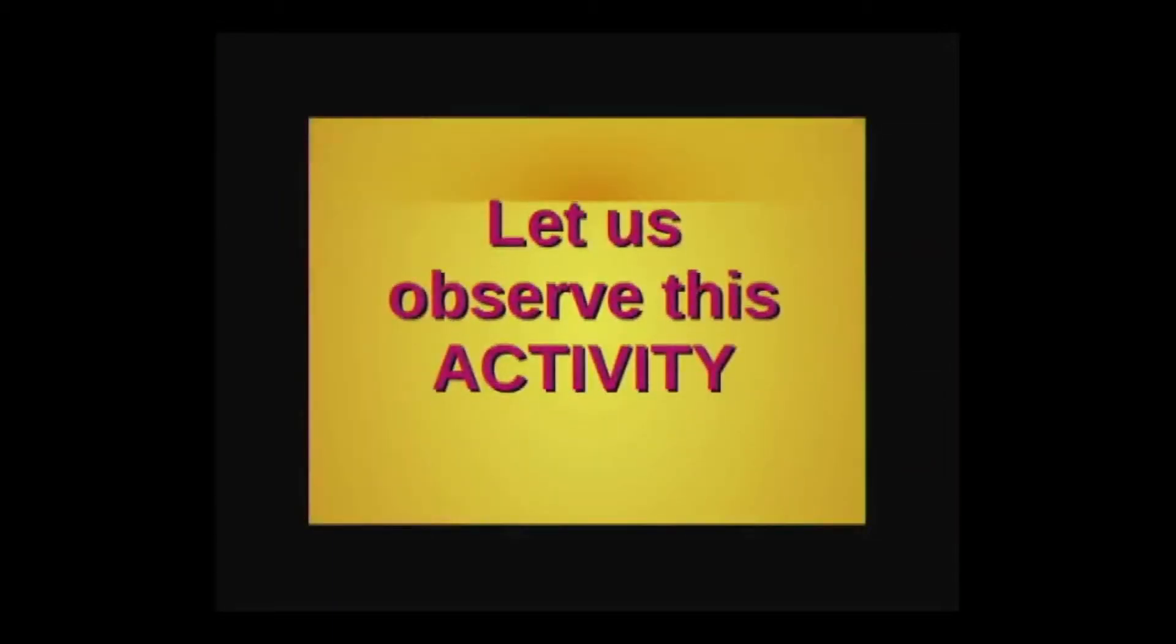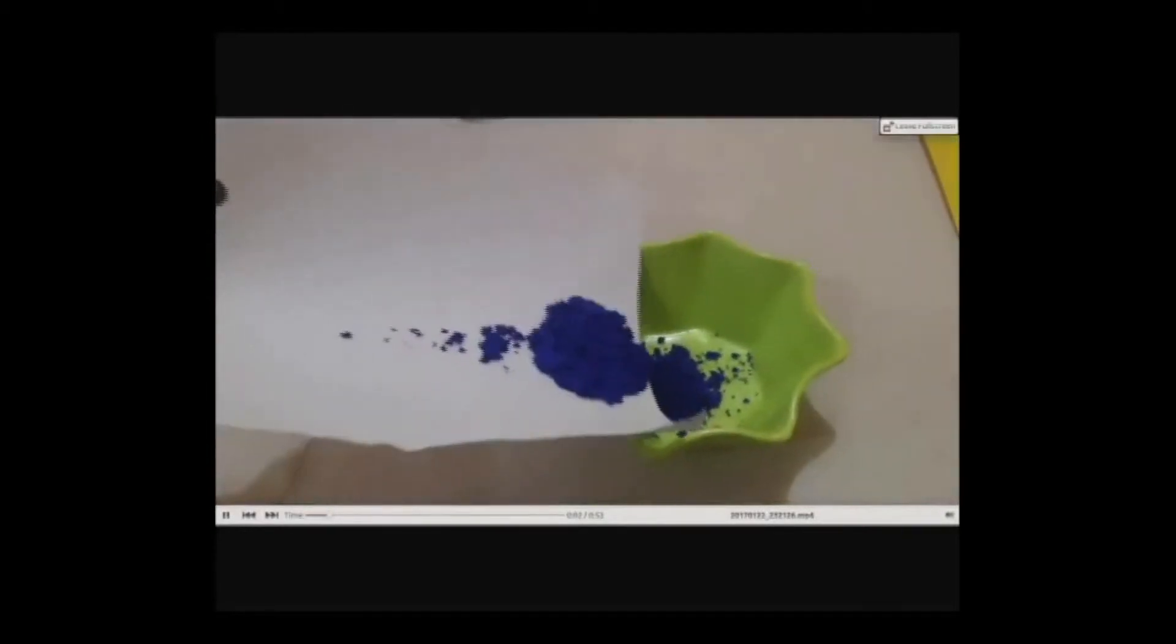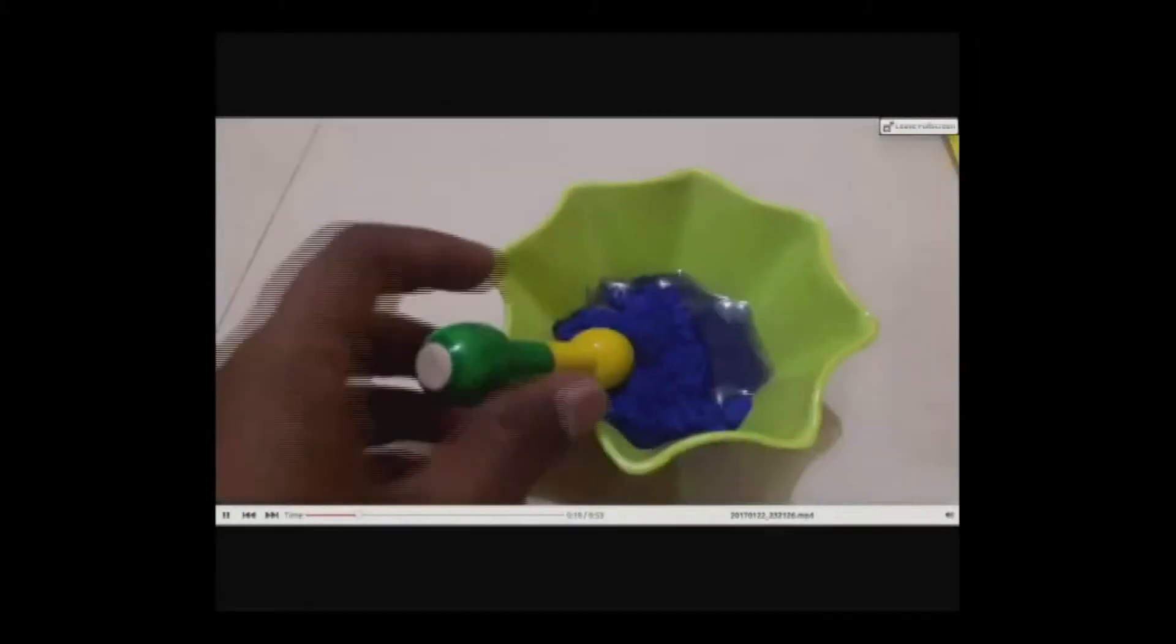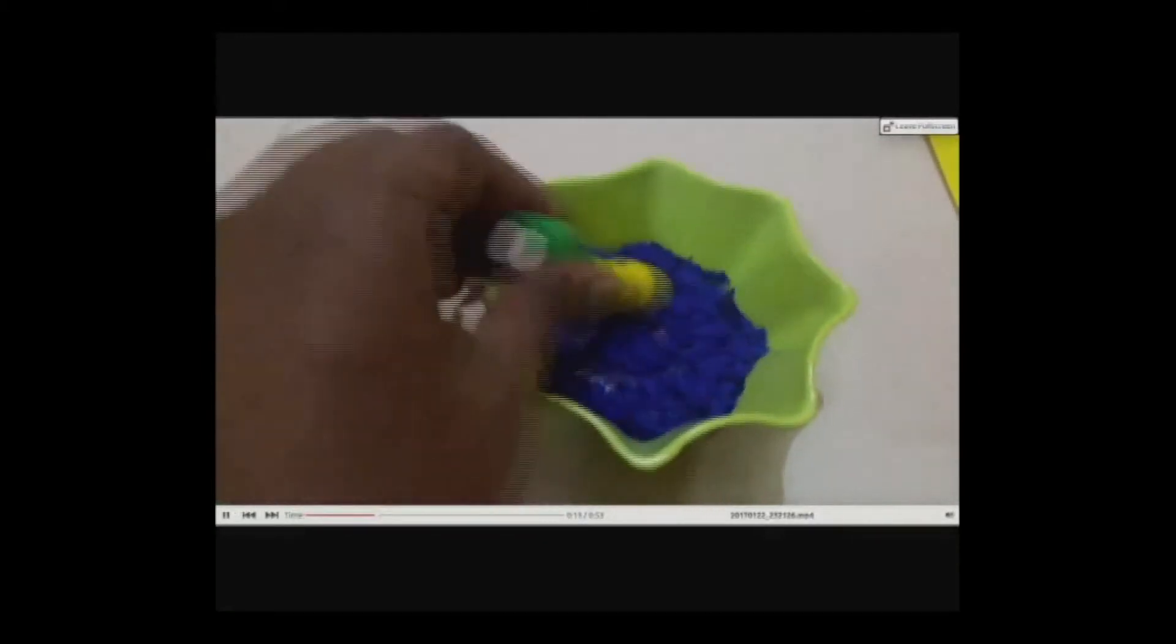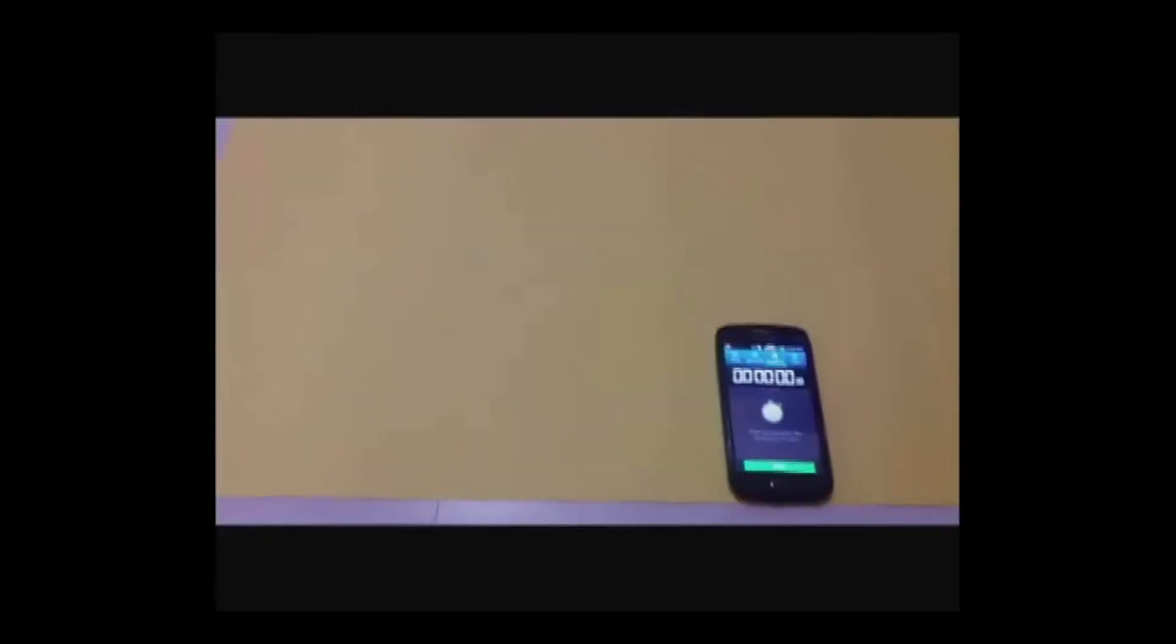Children, now let us observe this activity. Take a bowl, add blue color powder, add water to it, and mix it well. Then, with the help of a stopwatch, dip the pulley in blue color at one side and roll it on the yellow chart.